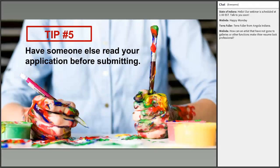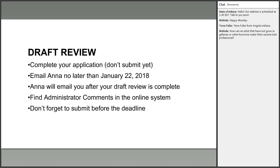My last tip: have someone else read your application before you submit. That person could be me. If you've never applied to the Individual Advancement Program before, you can request a draft review from me. Complete your application, don't hit submit, and email me no later than January 22nd, 2018. I'll review it on a first-come, first-served basis and leave comments directly in the application in blue, underneath each relevant question. I'll aim to give you about a week before the deadline to make changes — and don't forget you still need to hit submit before the deadline.